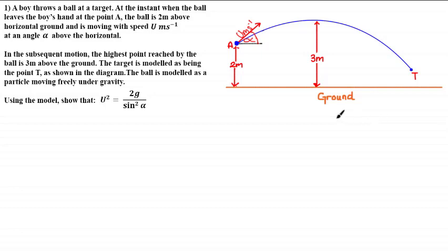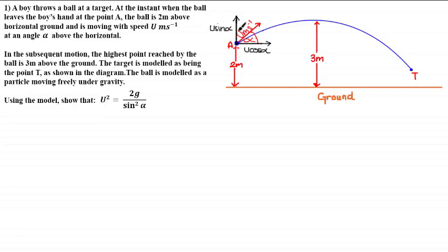Here we have a diagram which best illustrates the scenario. We've got a ball modeled as a particle, thrown from point A towards target T with a speed of u meters per second at an angle of alpha to the horizontal. The initial point of projection A is two meters above the ground and the highest point reached by the ball above the ground is three meters. As a standard step in projectile questions, let's split the velocity u into its horizontal component u cosine alpha and its vertical component u sine alpha.